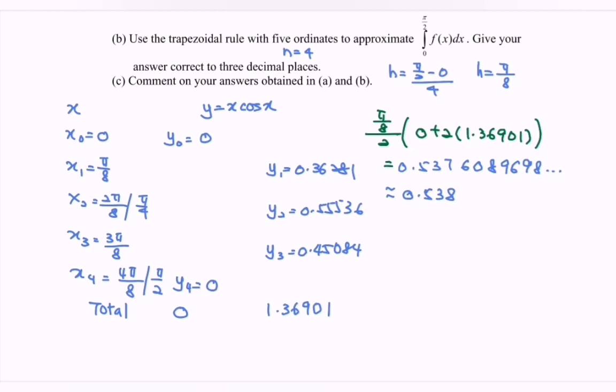Now refers to part c. Comment on your answer obtained in a and b. For part a, we have the situation π/2 minus 1, or we can say, and this one is an exact value. Whereas for b, we have 0.538, it is just an approximate value.